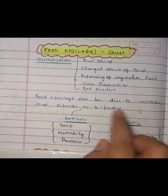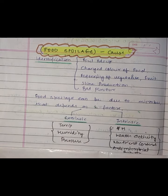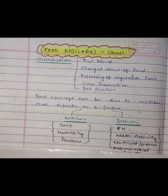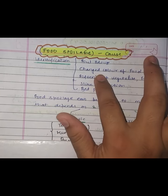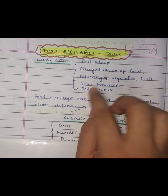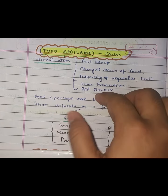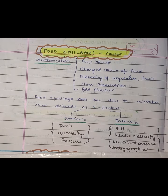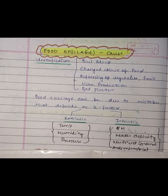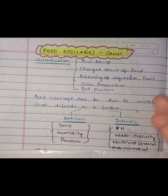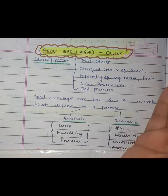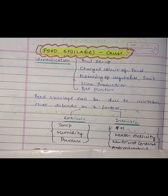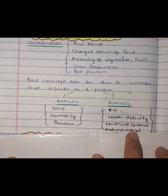Now let's talk about food spoilage. Food spoilage can be caused by microbes, and it depends on two factors: one is the extrinsic factor and one is the intrinsic factor.